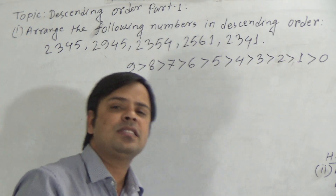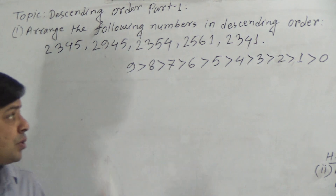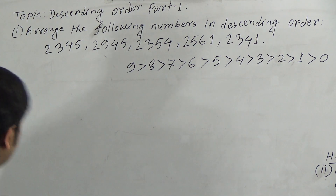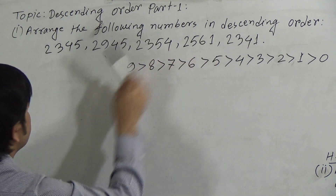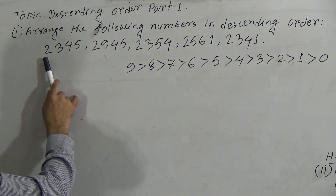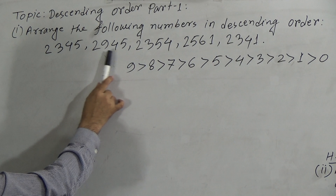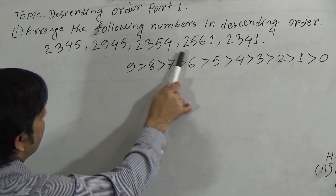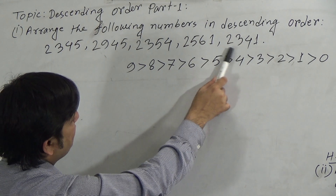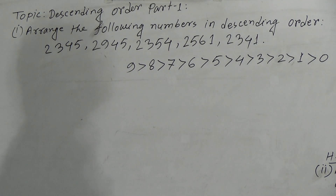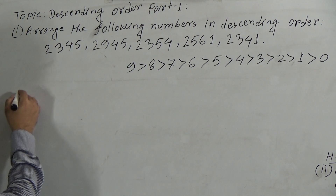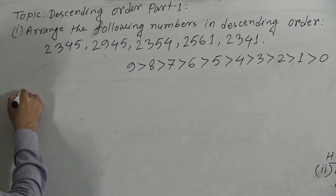Now let us start. Our question is: arrange the following numbers in descending order. Five numbers are given: 2345, 2945, 2354, 2561, and 2341. We have to arrange these numbers from larger to smaller. So we first have to identify which number is the largest. We can write here: Solution — arranging the following numbers in the required descending order.